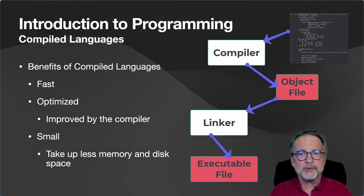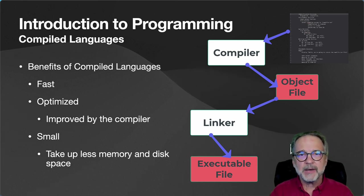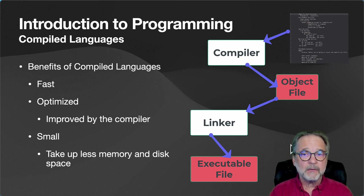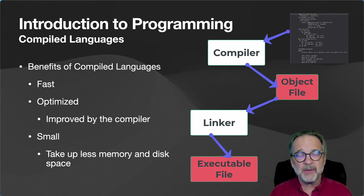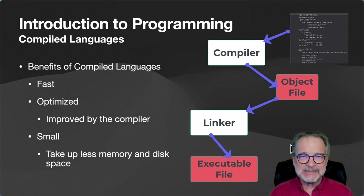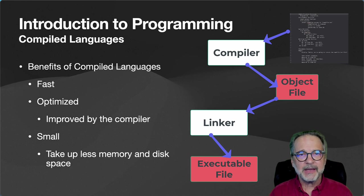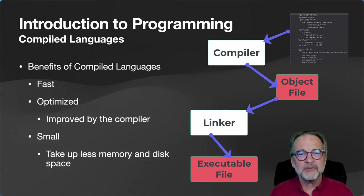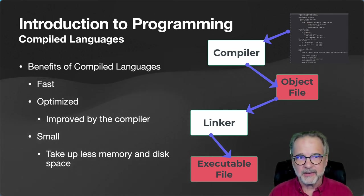Benefits of a compiled language: they're normally much faster and optimized — the compiler looks at your code and moves things around to make it more efficient. The executable program is also smaller, taking up less memory and disk space. It's also in a way protected, because it's not easy to look at and understand an object file or executable, whereas if you look at source code and know the language, you understand exactly what the program is doing — which matters if you're trying to protect an algorithm you've invented.